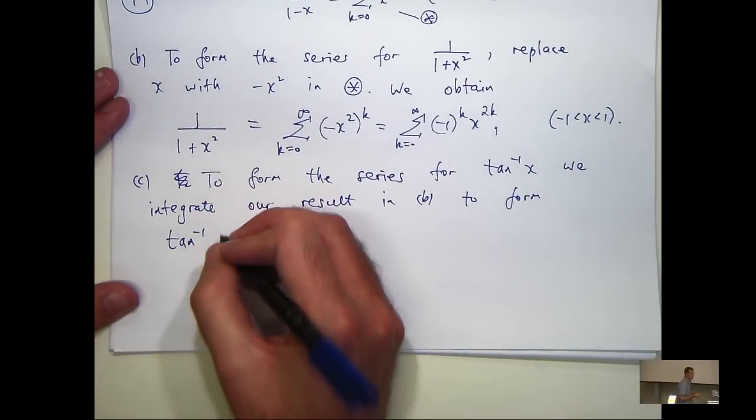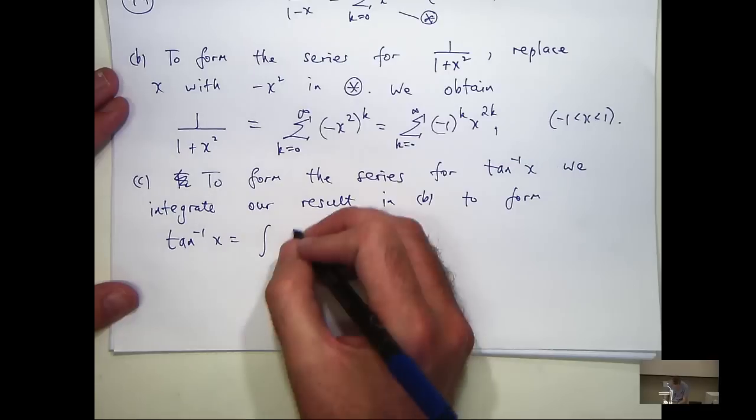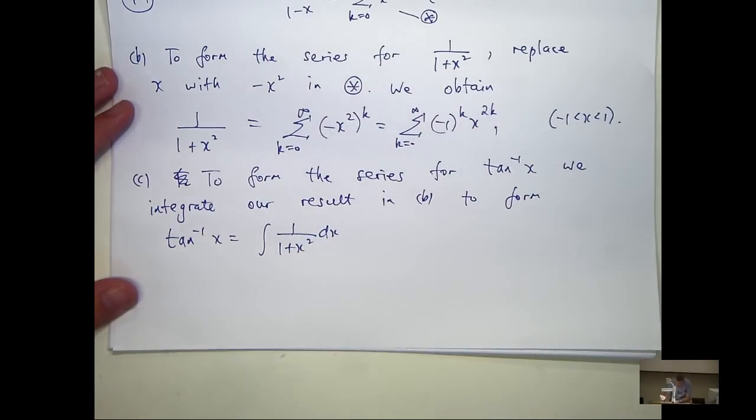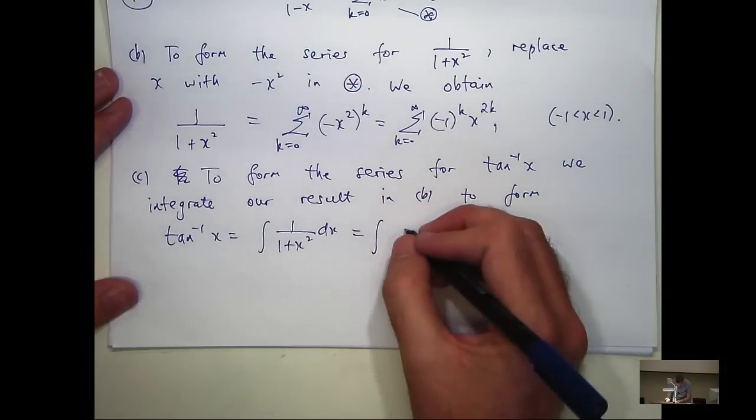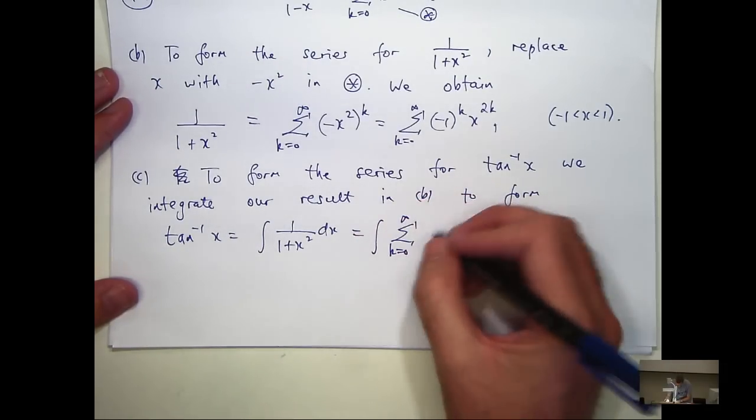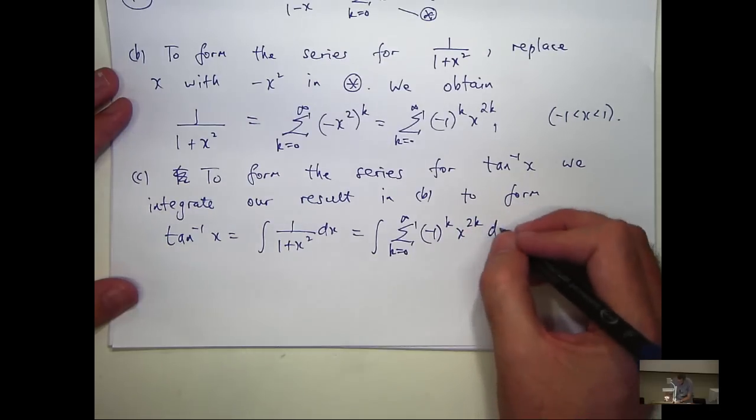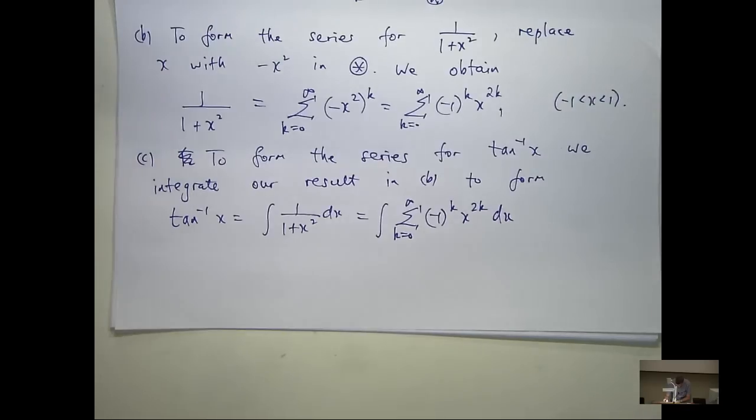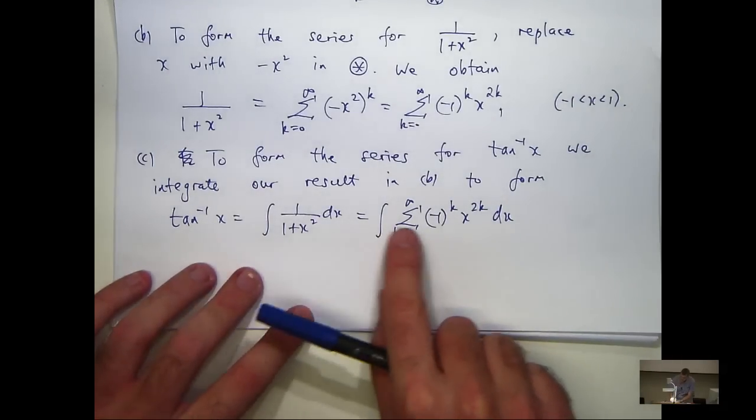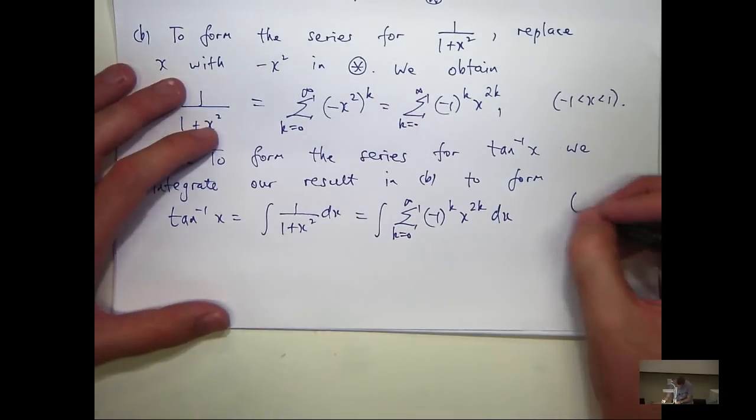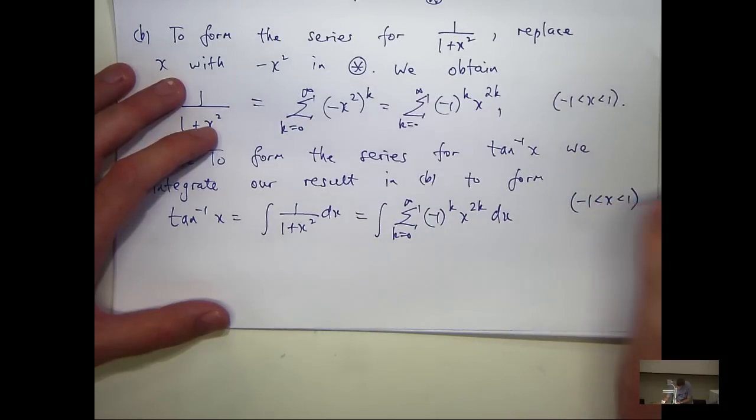Okay, so tan inverse x is just this integral here. Now because we have the convergence, and this is a huge, huge step, it means I can switch the summation and the integration. Okay? That's a huge step.